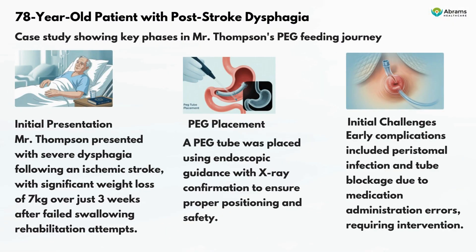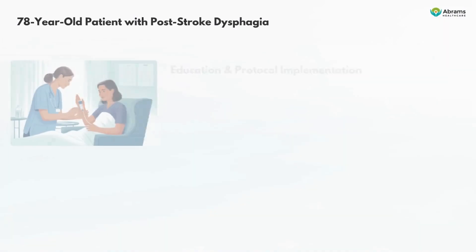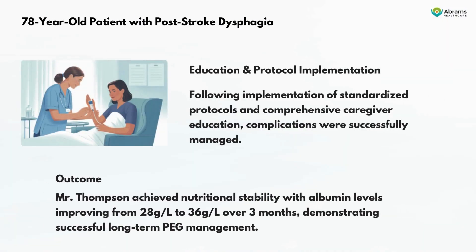Case Study: 78-year-old Mr. Thompson with post-stroke dysphagia. He presented with severe dysphagia following an ischemic stroke, with significant weight loss of 7 kg over 3 weeks after failed swallowing rehabilitation. A PEG tube was placed using endoscopic guidance with x-ray confirmation. Early complications included peristomal infection and tube blockage due to medication administration errors. Following implementation of standardized protocols and comprehensive caregiver education, complications were successfully managed. Mr. Thompson achieved nutritional stability, with albumin levels improving from 28 g/L to 36 g/L over 3 months.